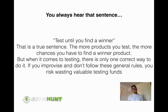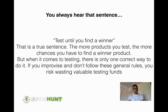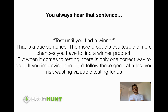You always hear the sentence 'test until you find a winner.' Well, that's basically true — this is how a dropshipping store works, or any eCommerce store. You're testing a product, then another, then another, and you repeat this until you find something that works. You find a winner product. What's a winner product? A product that the audience is responding well to — you're getting good feedback, good comments, good sales. You have to test a lot of products, or if you're lucky, the first one could be a winner.